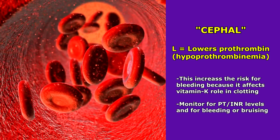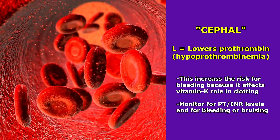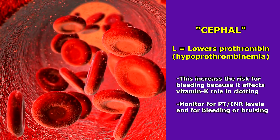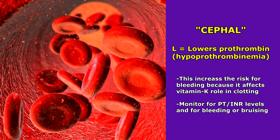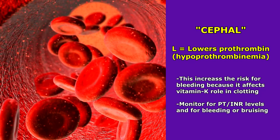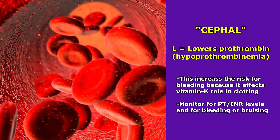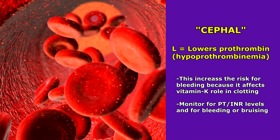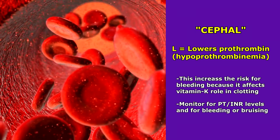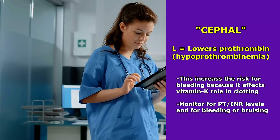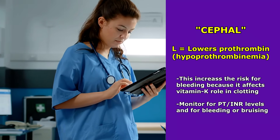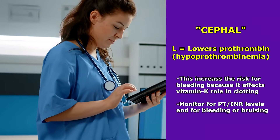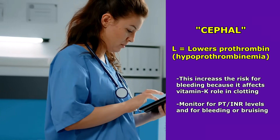L is for lowers prothrombin — known as hypoprothrombinemia — which increases the patient's risk for bleeding. What can happen is it affects vitamin K's role in clotting, which helps with the creation of prothrombin. You would monitor the PT/INR level and look at your patient to make sure they're not having any unusual bleeding or bruising.